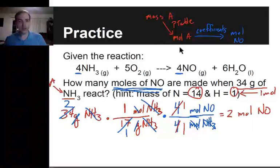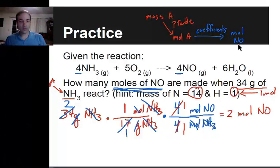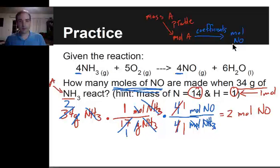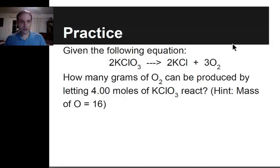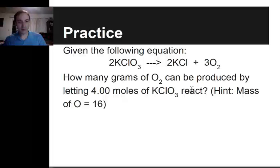That's how I do it. I used my diagram to set up the path — going from the given value to the value they wanted. Eventually you won't need the diagram, but having it out lets you plot your path and figure out what values to use. Let's do a practice problem where you do it on your own. Here's the balanced equation. The question says: how many grams of oxygen can be produced by letting 4 moles of potassium chlorate react?